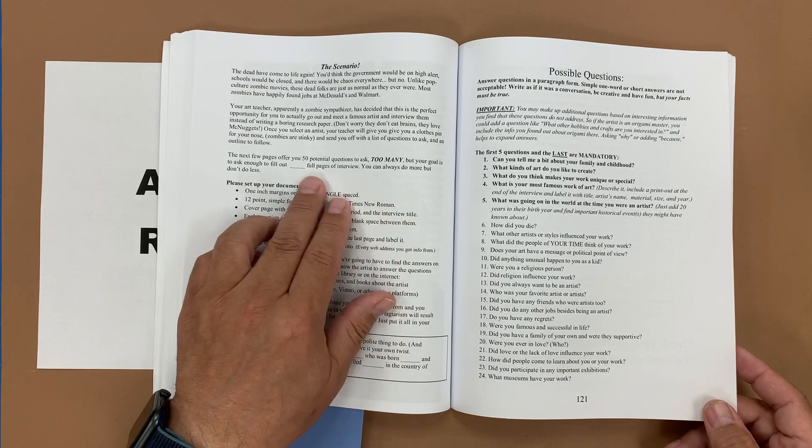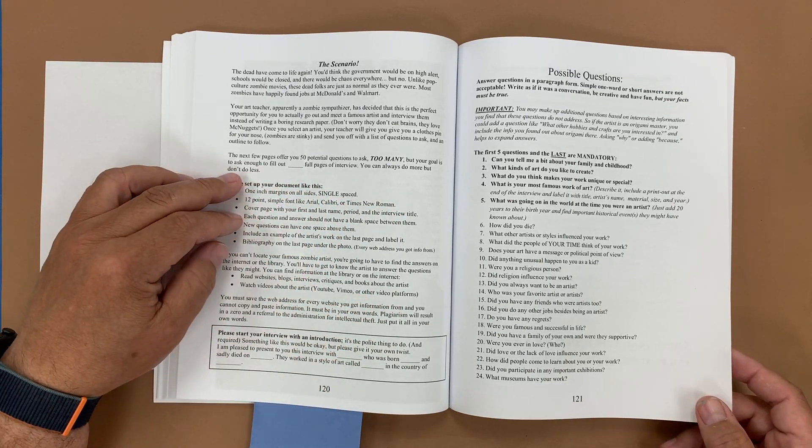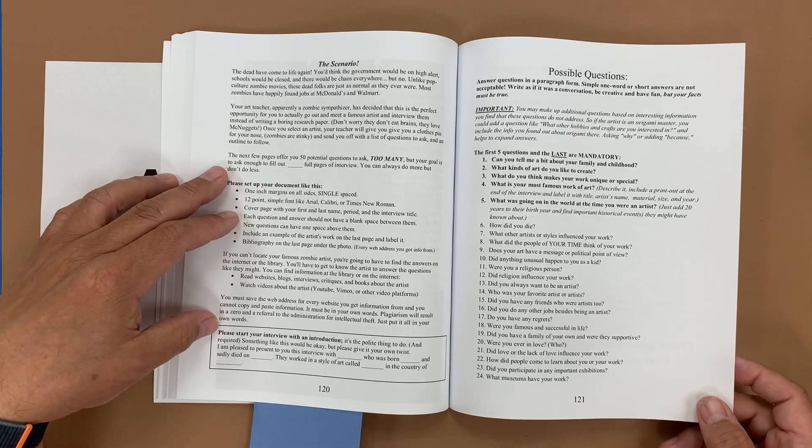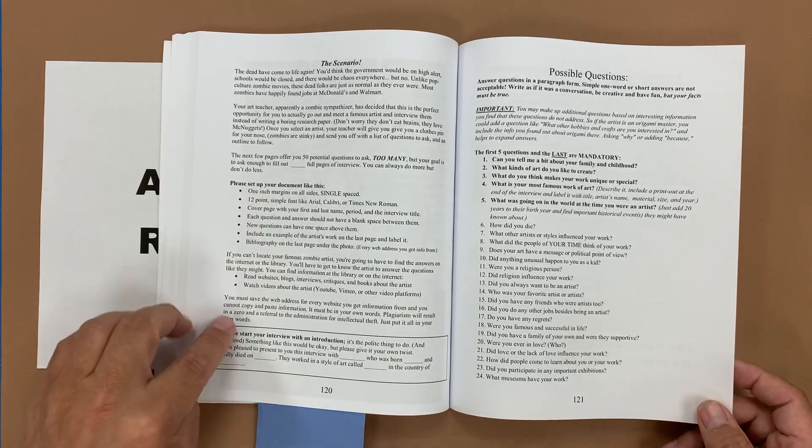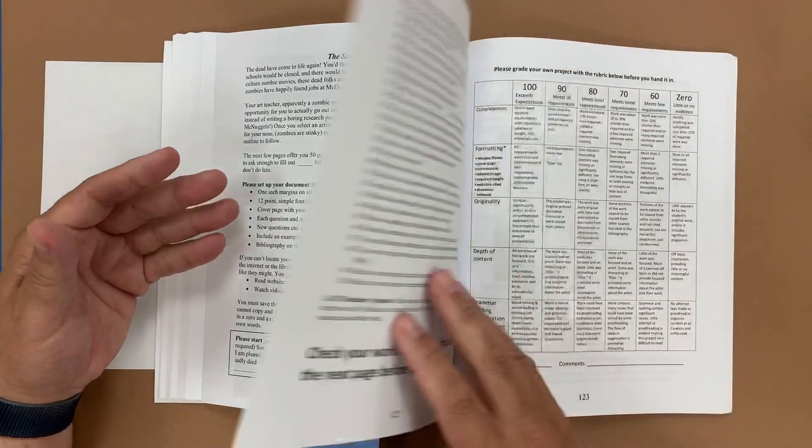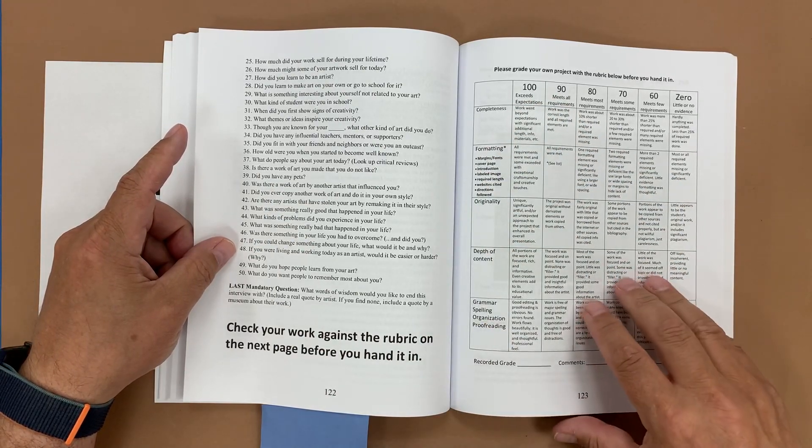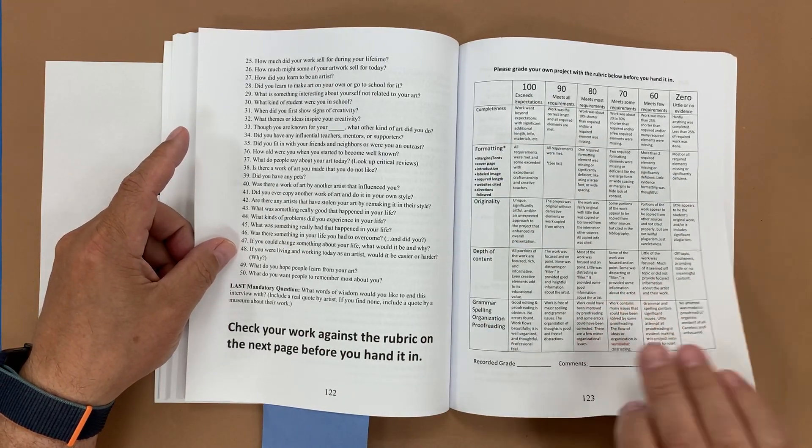By using Google we can have students do a plagiarism check which helps take that kind of out of the equation. We even have an interview introduction sample that students can use to kind of get on their way. Then there's a rubric included here that will help you grade the project when it's all done.